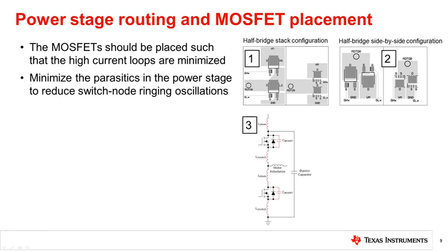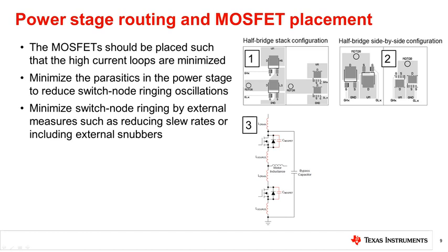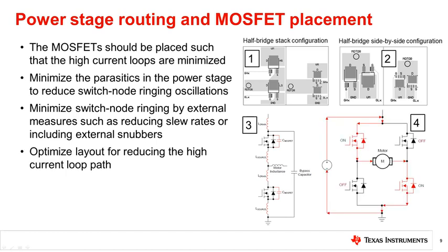Image 3 shows common parasitics like the inductance in the drain and source traces found in a half-bridge. The best way to minimize switch node ringing is by careful PCB layout. Use external measures such as reducing slew rate or including external RC snubbers when needed — the slew rate can be reduced by placing a resistor in the MOSFET gate or by using Texas Instruments smart gate drive technology for easy slew rate adjustment. Another solution is to place a snubber circuit between the drain and source of each MOSFET to filter out undesirable oscillations. It is strongly recommended to optimize the PCB layout to reduce the high current loop path, which can be minimized by using wide and short traces and reducing the number of layer jumps.